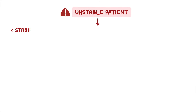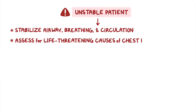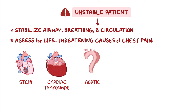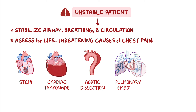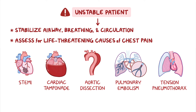In an unstable patient, your priority is to stabilize their airway, breathing, and circulation. Once they are stabilized, your next step is to evaluate for life-threatening causes of chest pain, such as ST-elevation myocardial infarction, or STEMI, cardiac tamponade, aortic dissection, pulmonary embolism, or tension pneumothorax. And remember, even if your patient is stable, it does not rule out these life-threatening conditions.